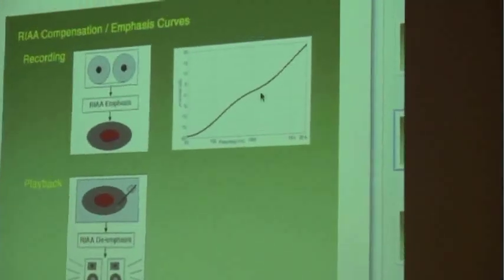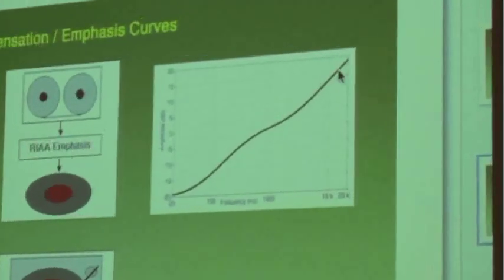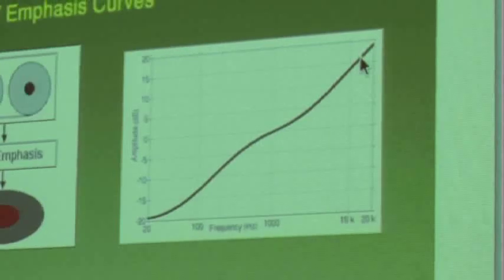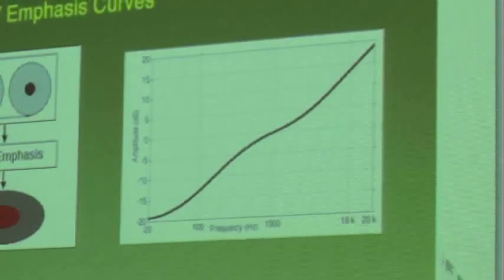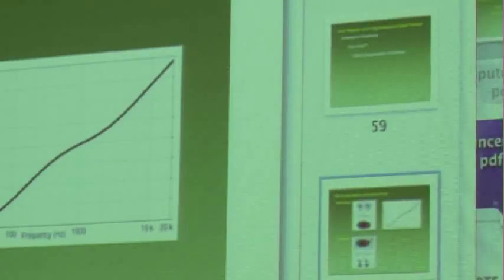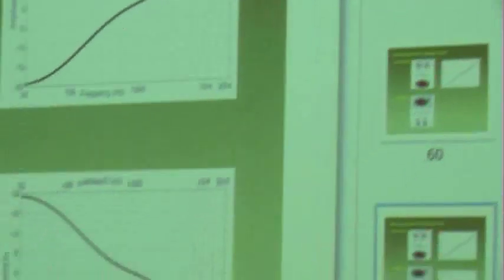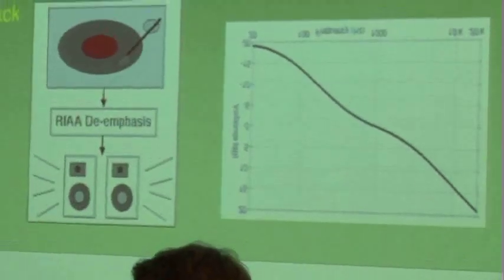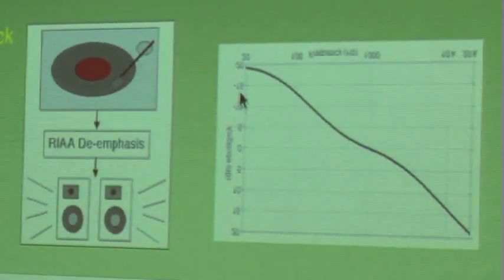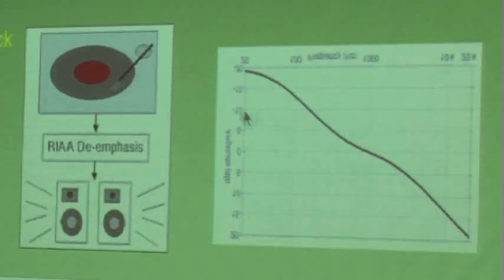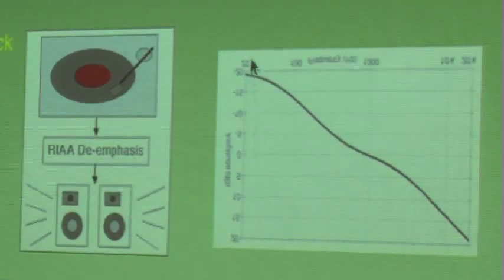The treble is boosted because this lets you pre-emphasize the treble so that when you play it back and apply the inverse of this curve, it reduces the noise generated from the physical process of playing the disc — the surface noise. So we apply the inverse of this curve — we boost the bass on playback and cut the treble on playback.